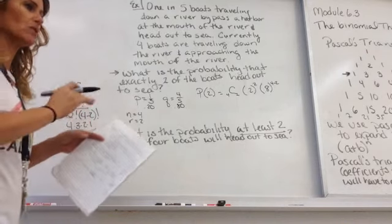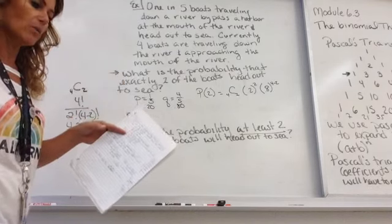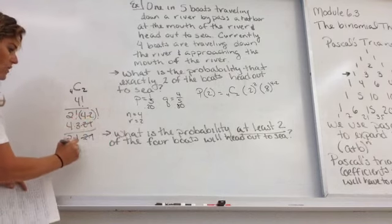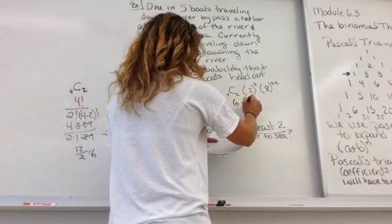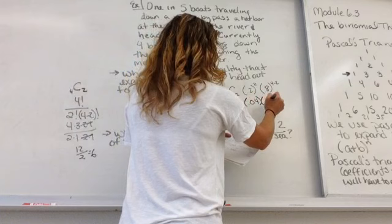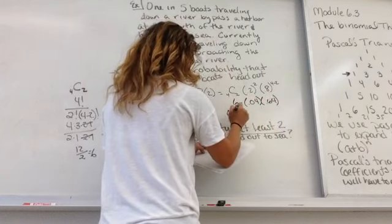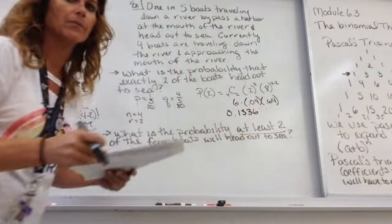A factorial just means that number times each number below it until you get to one. So, you can cancel out common factors. That's 12 over two, which gives us six. So, that's six times 0.04 times 0.64. Multiply it all out and we get 0.1536 is our probability.